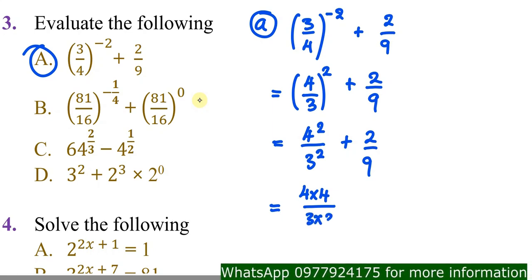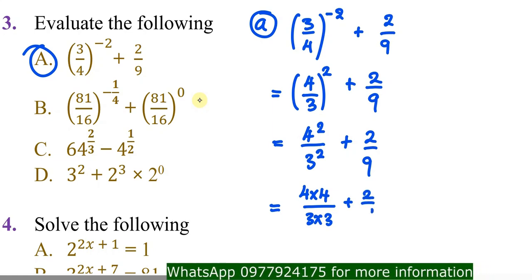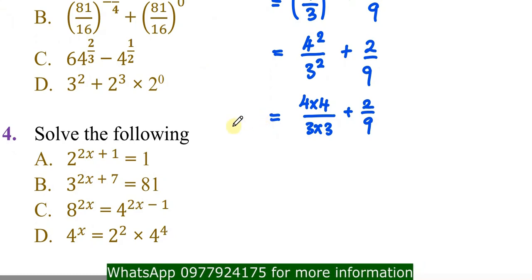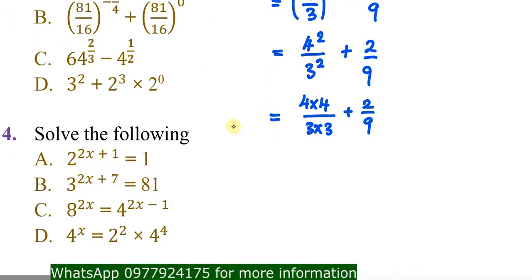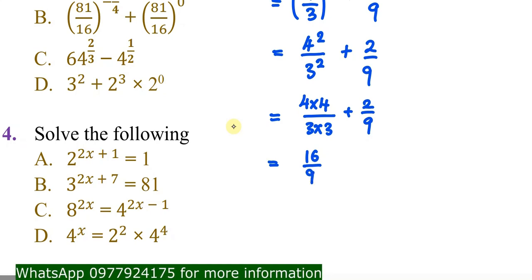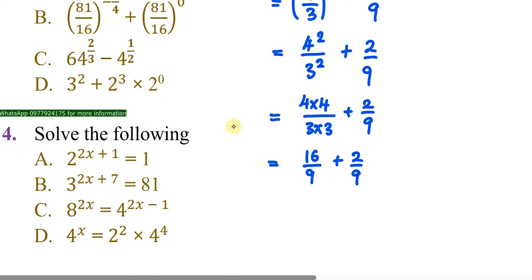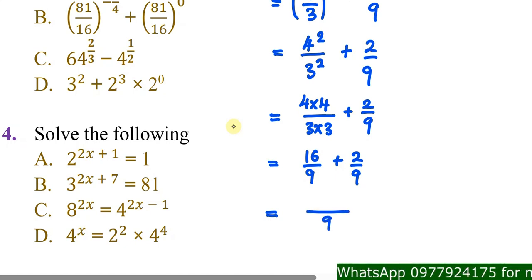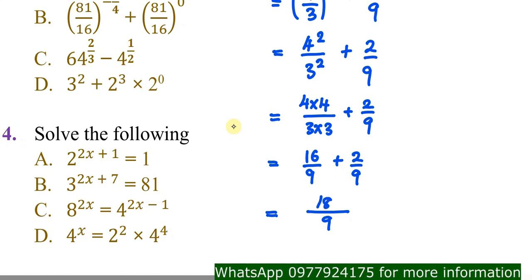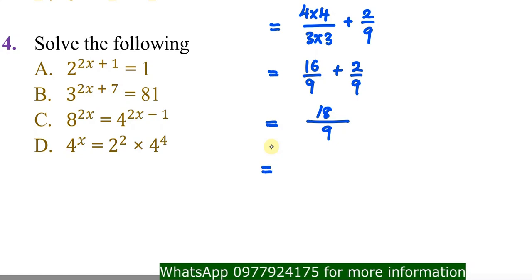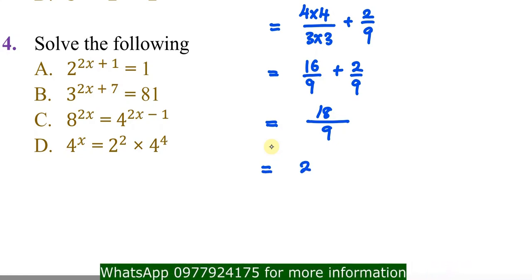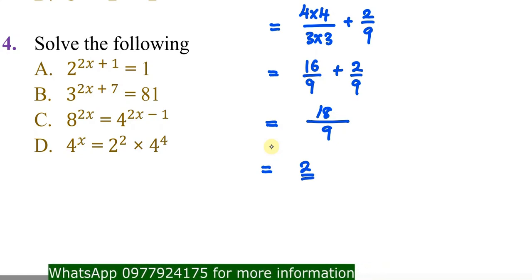So you get 16 over 9, plus 2 over 9. Because the denominators are the same — both 9 — you write 9 once and add the numerators: 16 plus 2 equals 18. So you have 18 over 9, then 18 divided by 9 equals 2. Your answer for part (a) is 2.